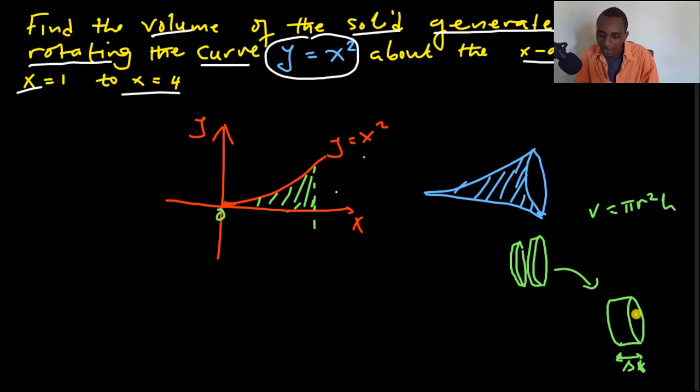And then the distance from here to here is obviously going to be the radius of our cylinder. So the volume in this case is going to be pi times the radius. Now, our radius is this distance from here to here, which is essentially the value of y, whatever coordinate of y it is here.